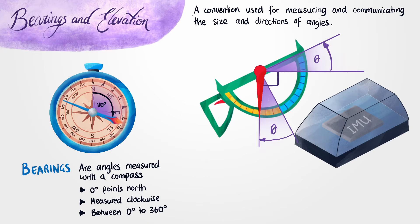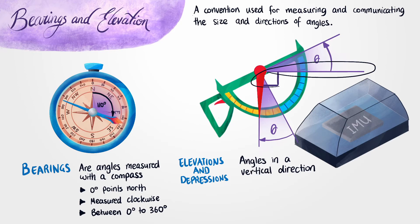Now any angle measured in the up or down direction is called an elevation or a depression. Now for angles of elevation, we say that zero degrees is just the horizontal direction. Then we go ahead and say that elevations are measured counter-clockwise, and depressions are just angles measured clockwise.